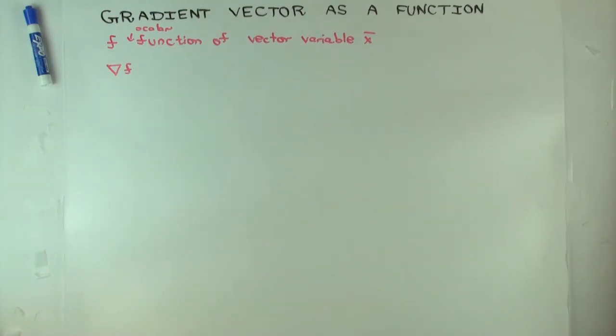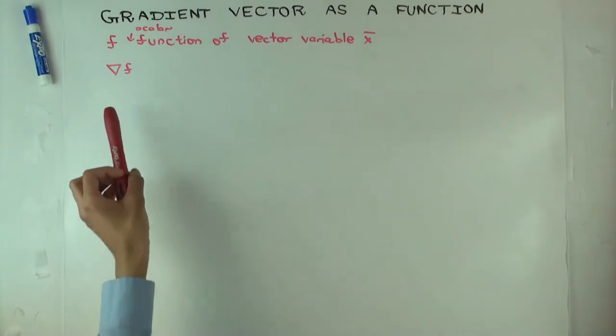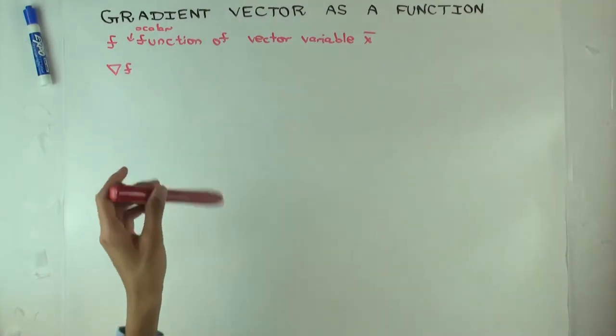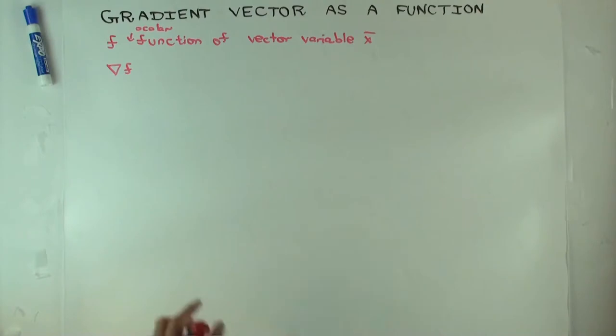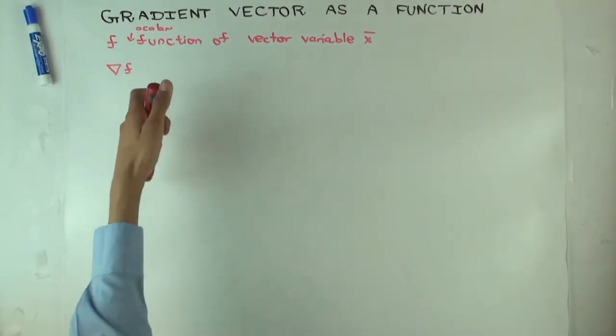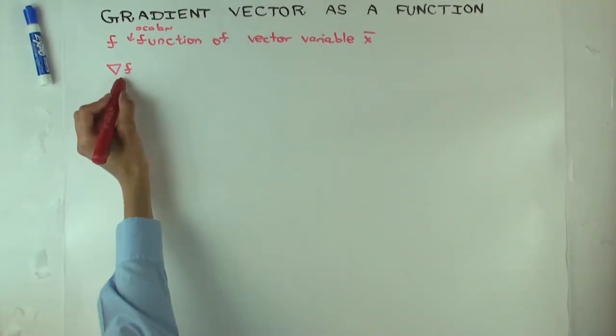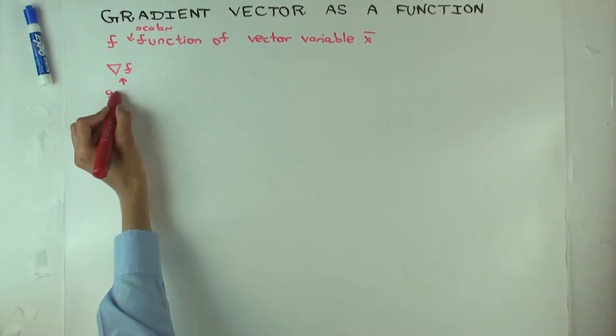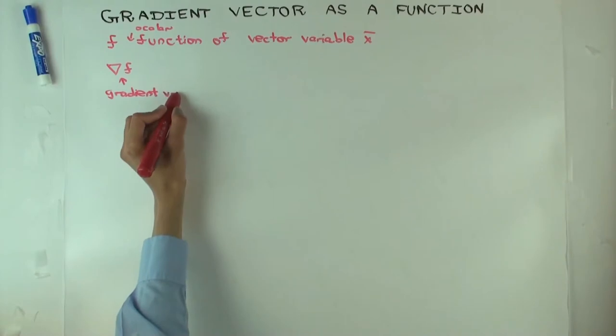So we can try taking the gradient vector, and in a previous video, which you should see before this one, I define the gradient vector of f at a point. So I define what it means to take the gradient vector. I will just call this gradient vector of f.